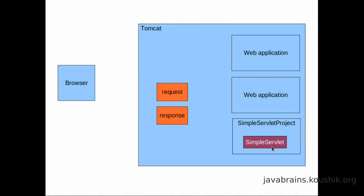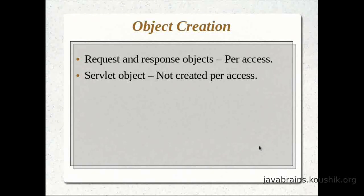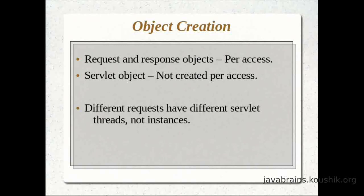But what about the servlet object itself? The servlet object is not created per access. Even if five different browser clients access the same servlet, there are not five different servlet objects — servlet objects are reused. Different servlet threads address these requests; they're not different instances. This is beneficial for resource usage: the Tomcat instance does not have to create new objects for each of the hundreds or thousands of users accessing the same servlet. Tomcat creates different threads, and each thread addresses a different user.